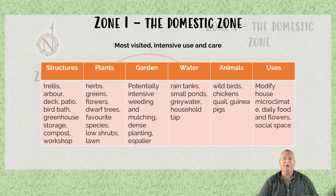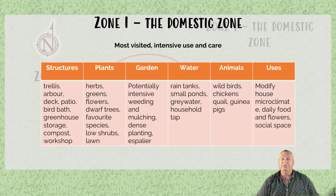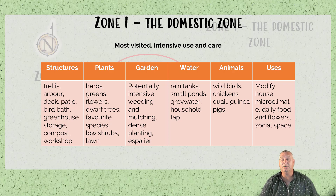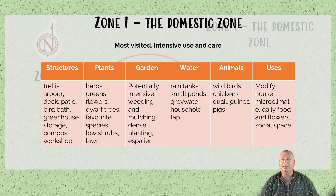Plants in zone 1 include herbs, greens, flowers, dwarf trees, and favourite shrubs. Low shrubs and lawn for walking through on bare feet, or for children to run around in. In the garden we're talking about intensive weeding and mulching, dense planting, and espalier across any surfaces to maximise what we're growing. For water: rainwater tanks, small ponds, greywater, and household tap water. Animals could include wild birds, chickens, quail, or guinea pigs. The uses include modifying the house microclimate, daily food, flowers, and it's a social space — where we spend most of our time outside of the house.